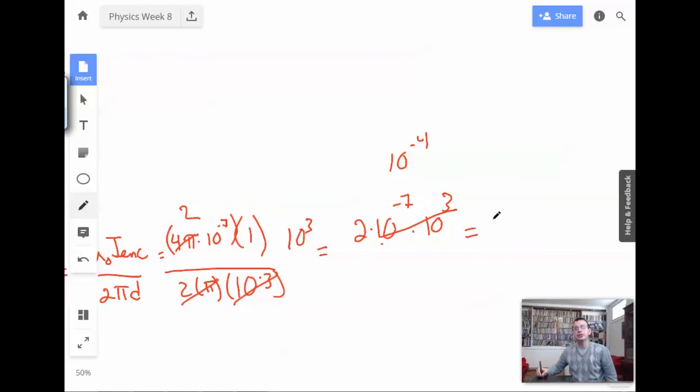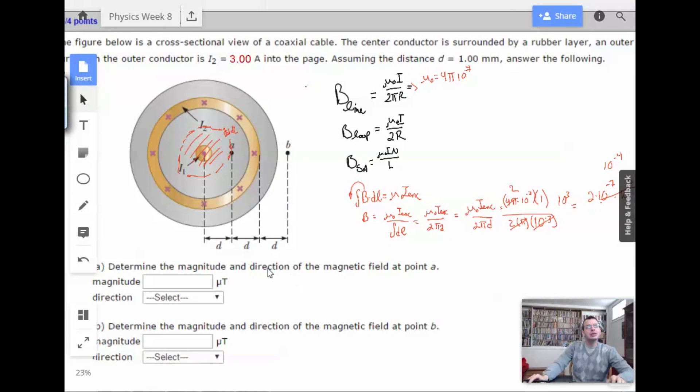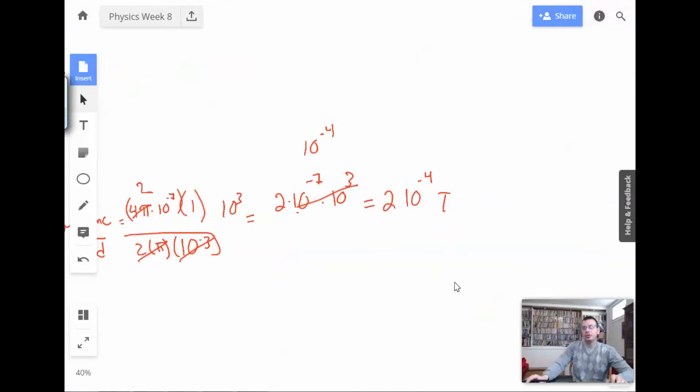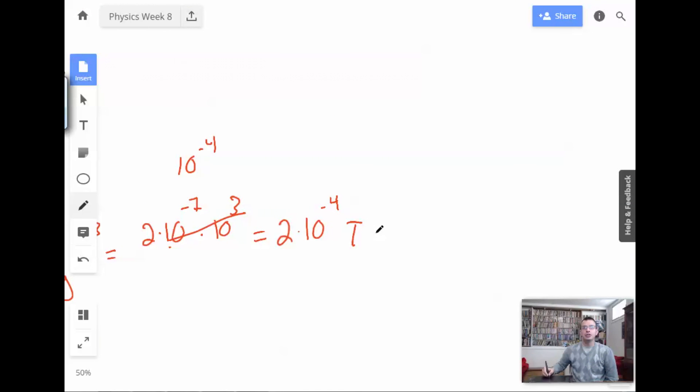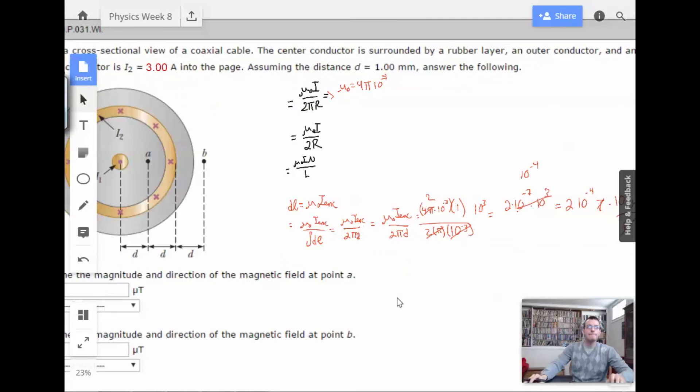So, let's cancel some of these out. We have 2 times 10⁻⁷ times 10³, which becomes 10⁻⁴. We're finding magnetic fields, so I'm going to say Teslas. But they want micro-Teslas. So, we've got to convert this guy. Times 10⁶ micro-Teslas for one normal Tesla. We get 2 times 10² micro-Teslas, which is 200. 200 micro-Teslas.